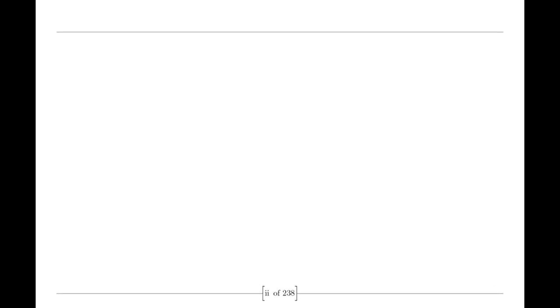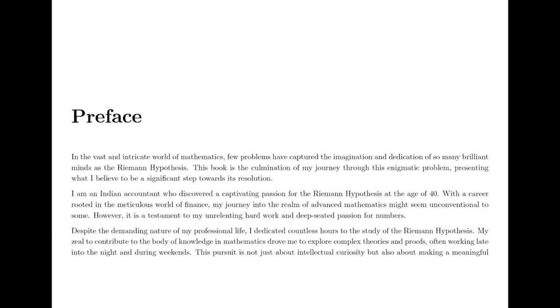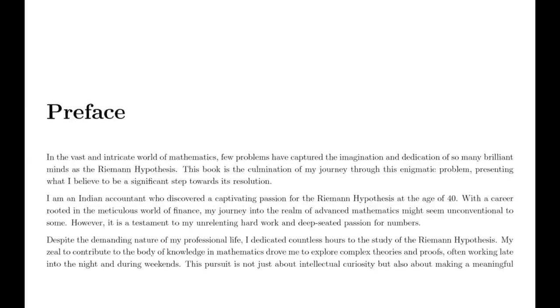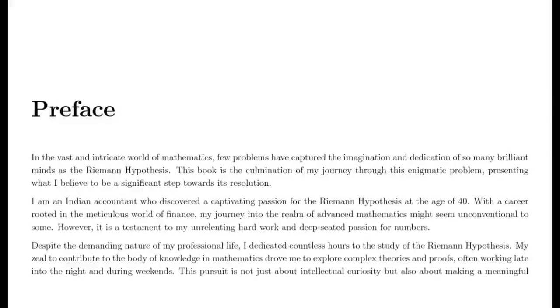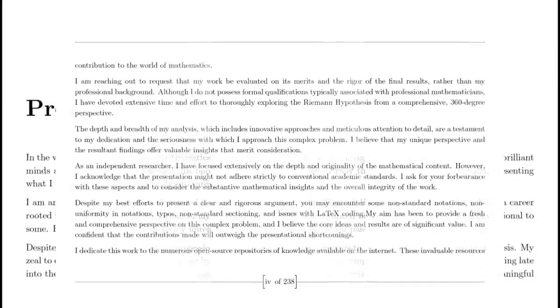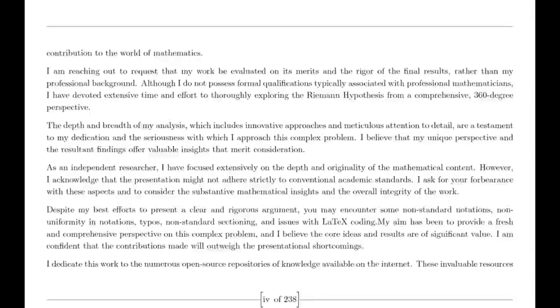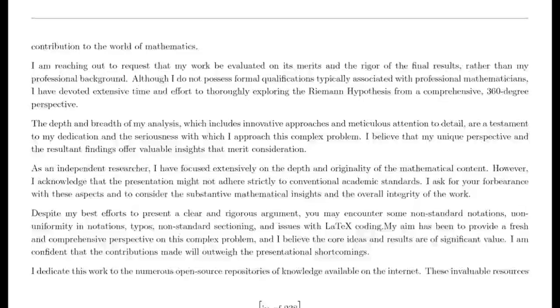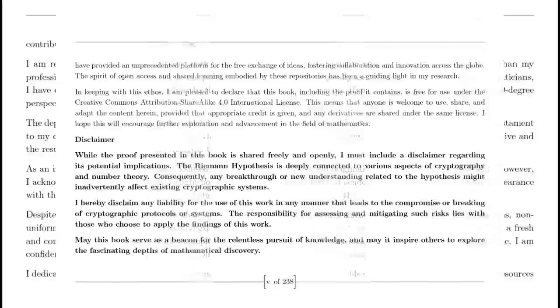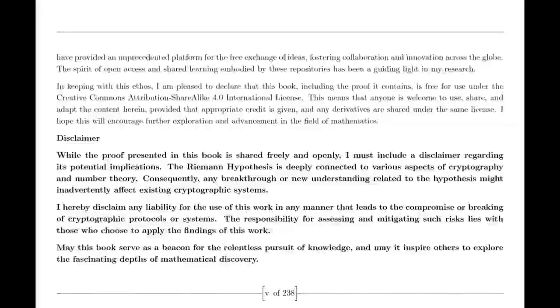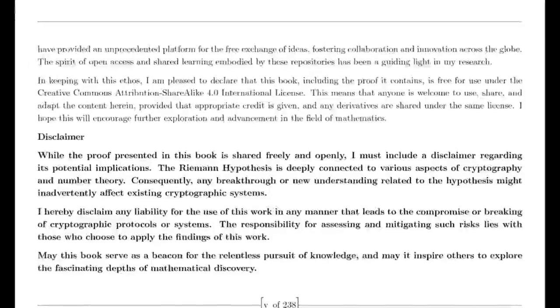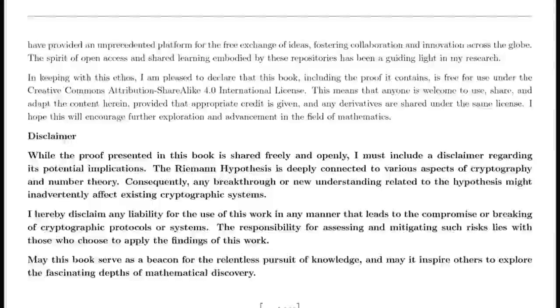Euler's Initial Work. We begin with the remarkable contributions of Leonard Euler. In the 18th century, Euler made groundbreaking discoveries in understanding infinite series. He introduced the idea that the harmonic series — the sum of the reciprocals of the positive integers — could be expressed as a product over prime numbers. This revolutionary insight linked the harmonic series to the complex and profound properties of prime numbers, and was one of the first indications of deep connections between primes and series.